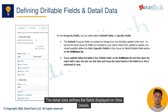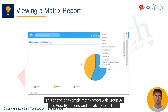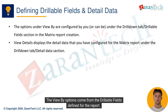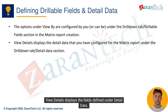The detailed data defines the fields displayed on view details. This shows an example matrix report with group by and view by options and the ability to drill into a summary amount. The view by options come from the drillable fields defined for the report, and view details displays the fields defined under detailed data.